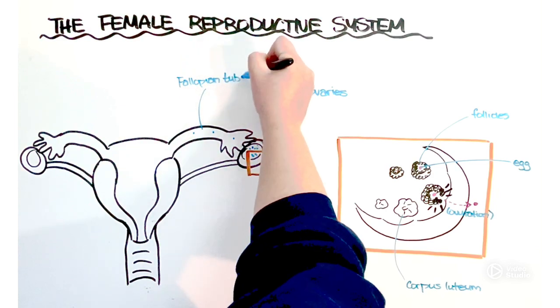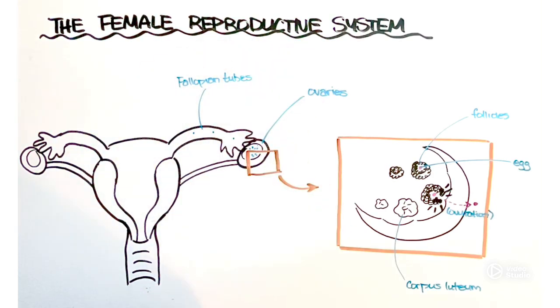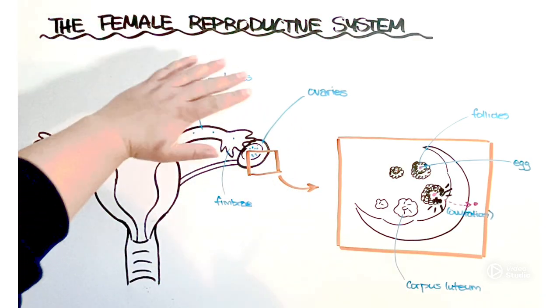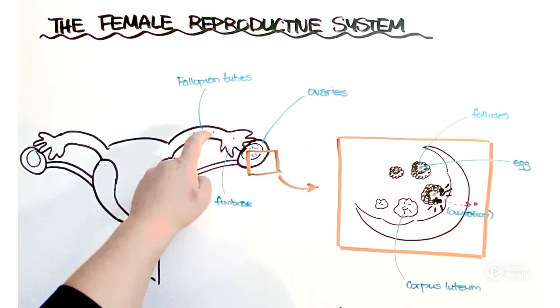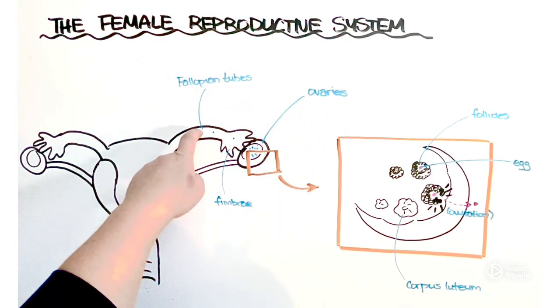Sometimes also known as oviducts. And so that's where these little finger-like projections at the end of the fallopian tube come in handy. These are known as fimbriae. Because the ovaries are not directly attached to the fallopian tubes, the fimbriae, once the egg is released or ovulated, basically act to sweep it up and increase the probability of that egg making its way into a fallopian tube.